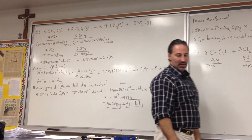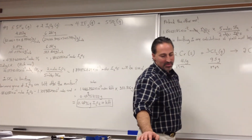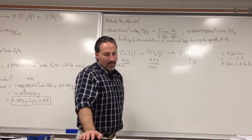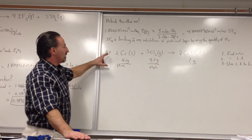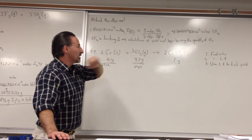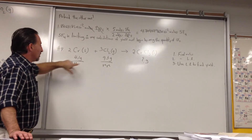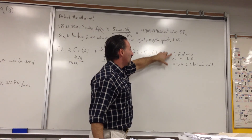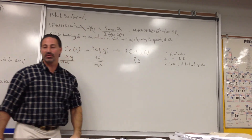For number 9, the next question on your handout: if 4.1 grams of chromium is heated with 9.3 grams of chlorine, what mass of chromium chloride will be produced? First, balance the equation — chromium plus chlorine gives chromium chloride. Then divide by the molar masses to find the number of moles. You always go to moles first, then find the limiting reagent, and then find the yield.